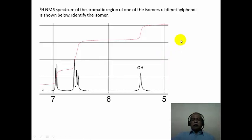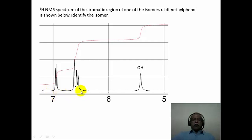Let us move on to the next question. Here again, the aromatic region of a particular compound is shown. This is a proton NMR spectrum of the aromatic region of one of the isomers of dimethylphenol. Which isomer is this? If you look carefully in the aromatic region between 6.5 to 7 ppm, there is a doublet with a large coupling corresponding to an ortho coupling, corresponding to one hydrogen intensity.